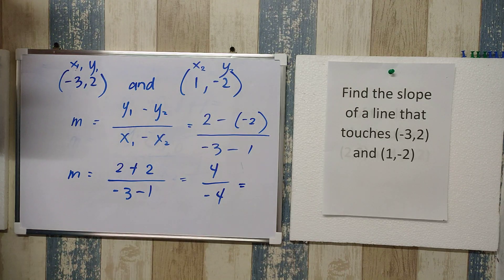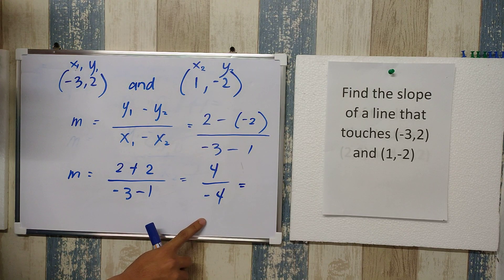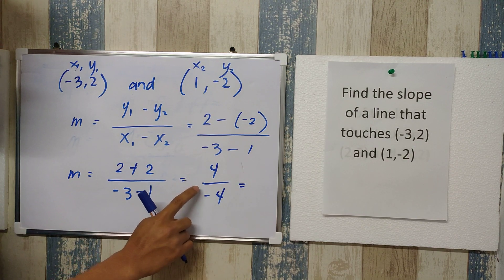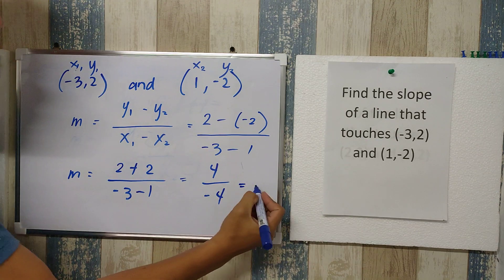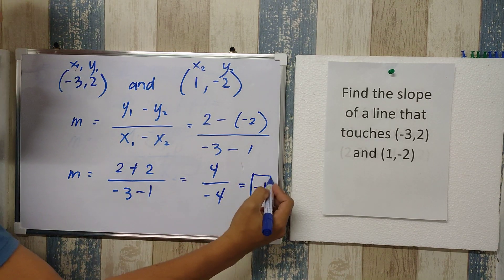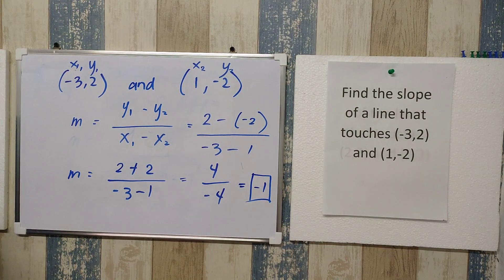We need to simplify this further. This is actually correct, but our answer should always be in simplest form. So the final answer here, when 4 is divided by negative 4, it's negative 1. So the slope of this line is negative 1. That is our final answer. Let's try to have another example.